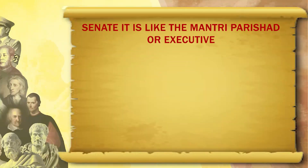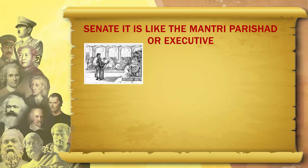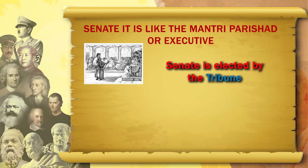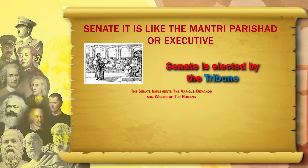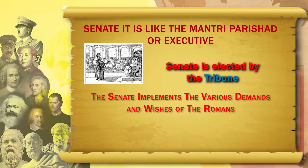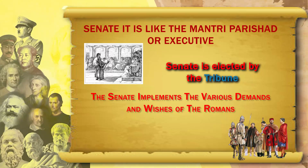The tribune meant an open forum, an open area for all Romans to come and talk about political affairs and take decisions, and then ask the senate to implement them. The senate is like the executive — elected by the tribune, by the people — and then the senate implements the various demands and wishes of the Romans.